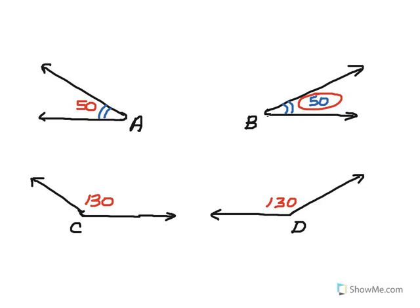We can modify this a bit by adding two angles, C and D. If A and C are supplementary to each other, and B and D are supplementary to each other, and angle C and angle D are congruent to each other, then since A is supplementary to C and B is supplementary to D, and C and D are congruent, we must know that angle A and angle B are congruent as well.